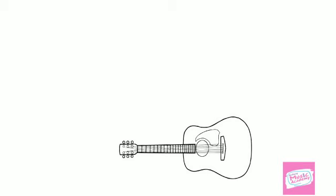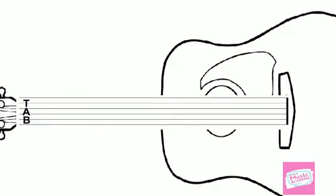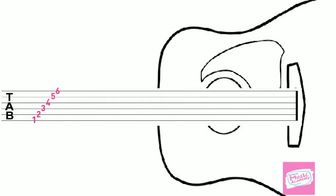Now, moving on to tablature. Tablature, or tab, as it is often referred to, consists of six horizontal lines. These horizontal lines represent the six strings of the guitar.